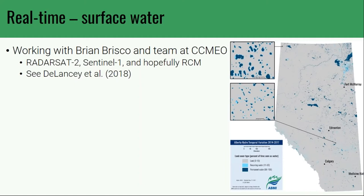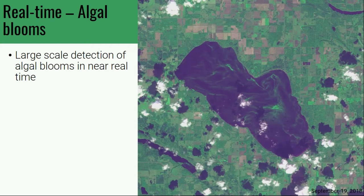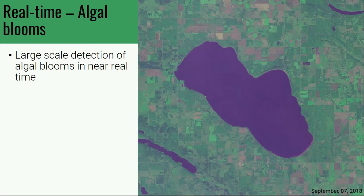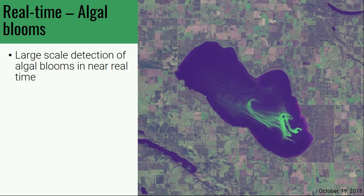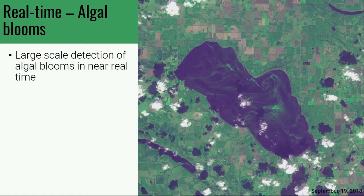Once we know where surface water is, we can characterize its properties. At Pigeon Lake, an algal bloom appeared in mid-October — quite intense — rapidly changed and then disappeared. We use real-time Sentinel-2 optical data to capture where algal blooms occur and how often. Knowing where water is naturally leads to understanding the properties of that water.